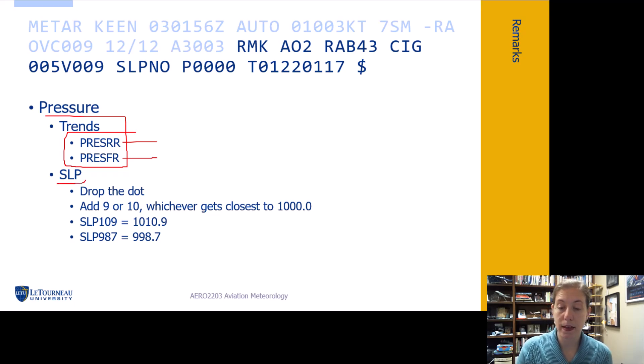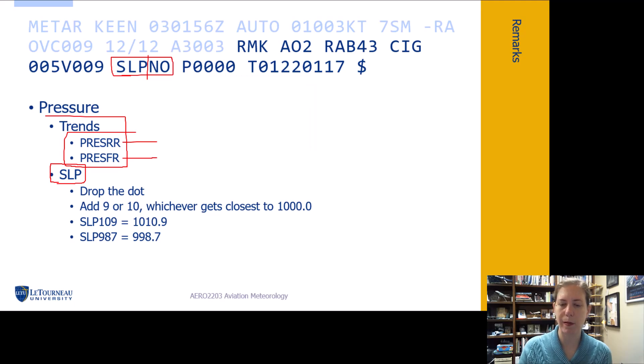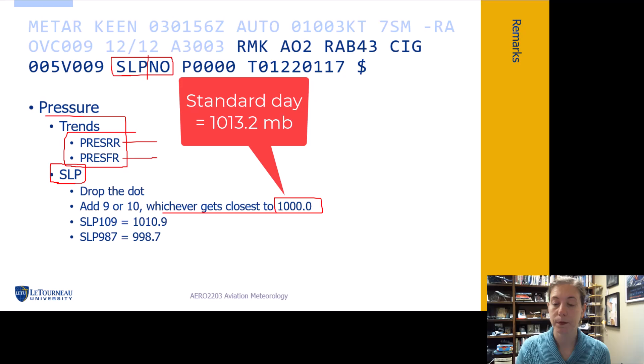SLP. This is the sea level pressure sensor. So we need to know how to read this part. At this station, it's not reporting because the sea level pressure system is not operational right now. But what we might see as an example of how to read these is basically we want to get closest to 1000 millibars. If you think about a standard day, remember that's 1013.2 millibars pressure.